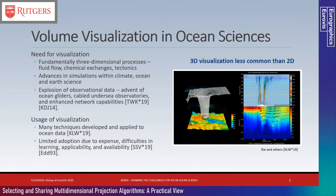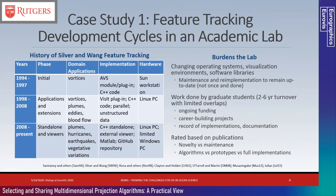Ocean science needs better visualization techniques than common 2D methods because ocean circulation and dynamics problems are fundamentally three-dimensional with flow in and out of planes. Recent advances in simulation capacity and the explosion of observational data mean there is more 3D data than ever. This modeling and data explosion should drive adoption of volume visualization methods but it does not seem to help. The first case study looks at feature tracking methods developed in Deborah Silver's lab. Since the initial papers in the late 1990s, these methods have been implemented and re-implemented several times, generally to accommodate changes in the users' desired software environments.